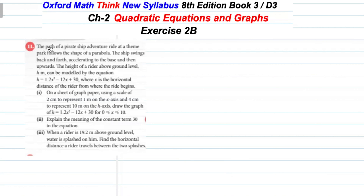Question 11: the path of a pirate ship adventure ride at a theme park follows the shape of a parabola. The ship swings back and forth, accelerating to the base and then upward. The height of the rider above ground level in centimeters can be modeled by the equation where x is the horizontal distance of the rider from where the ride begins. Part one: on a sheet of graph paper, using a scale of 2 centimeters to represent 1 meter on the x-axis and 4 centimeters to represent 10 meters on the h-axis, draw the graph of h = 1.2x² − 12x + 30 for values of x from 0 to 10.